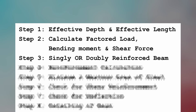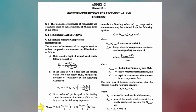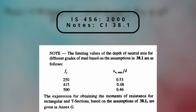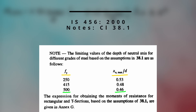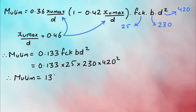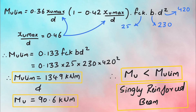Step 3 is to check whether the beam is singly or doubly reinforced by calculating the limiting moment. XU_max/D is taken from the notes of section 38.1 for Fe 500 steel. Substituting gives MU_limiting = 0.133 × fck × B × D². With the given values of fck, B, and D, the limiting moment is 134.9 kN·m. Since the applied moment MU of 90.6 kN·m is less than the limiting moment, the beam is designed as a singly reinforced beam.